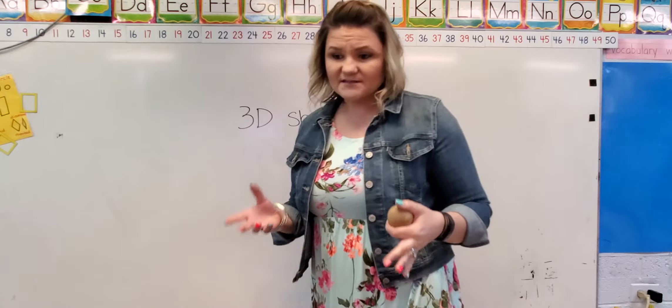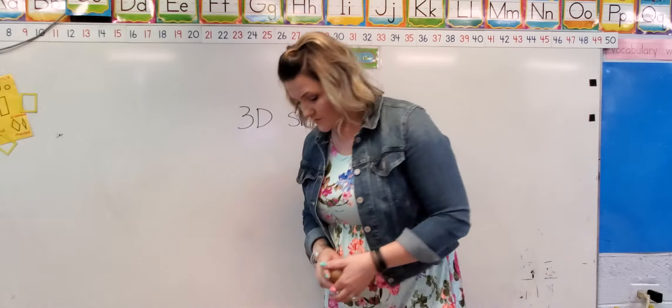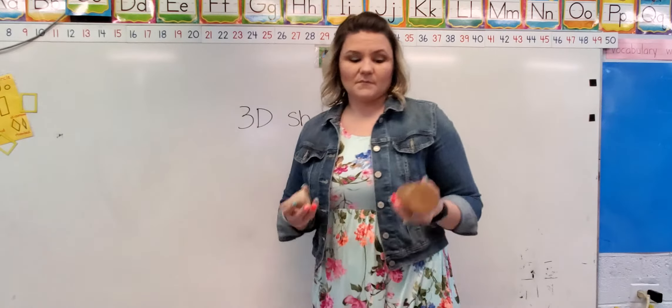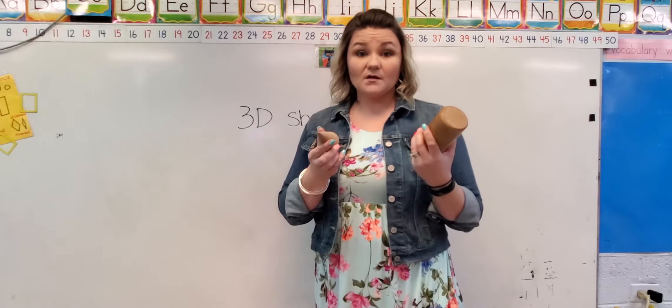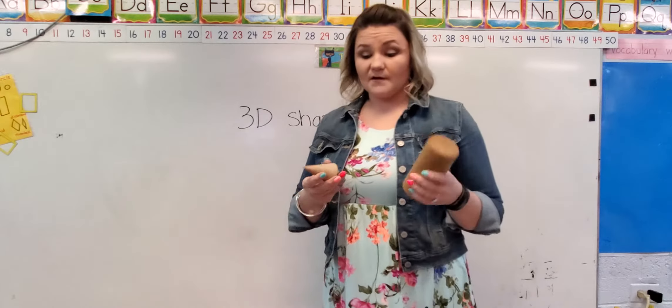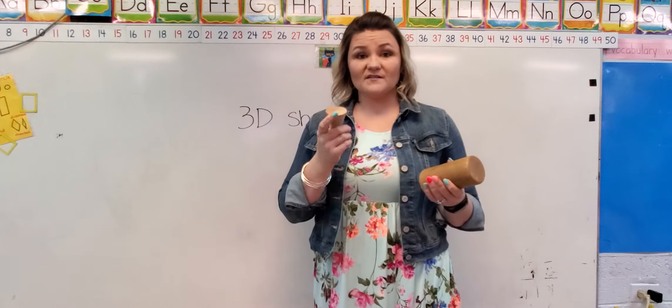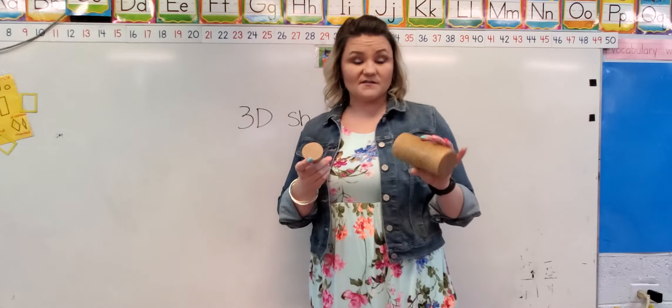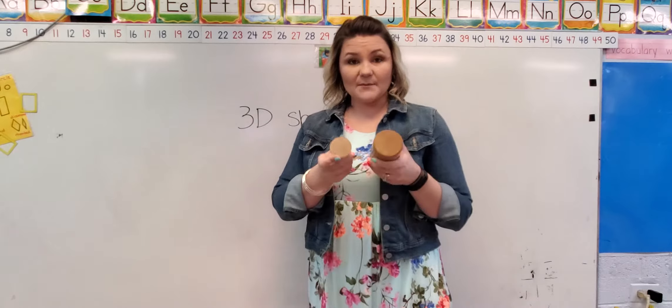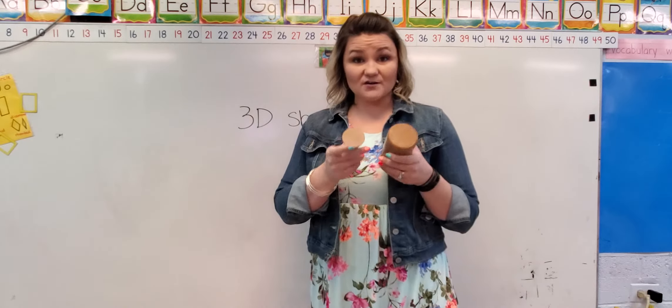So whenever you're asking your child, tell me about the different attributes of a cylinder and a cone. How are they the same? How are they different? Talk to me about the attributes. They're typically going to say a cone has one face that's a circle. A cylinder has two faces that are circles. They're the same because they both have faces that are circles.